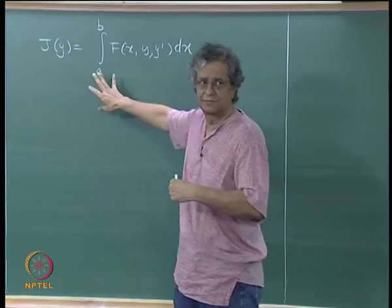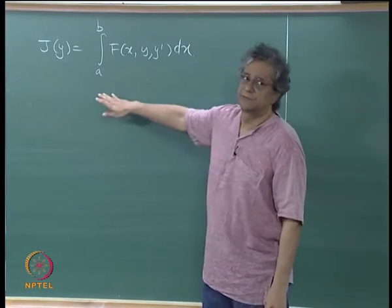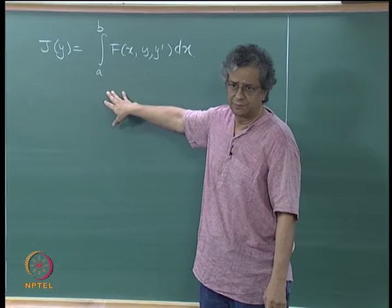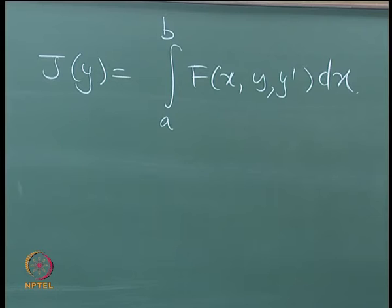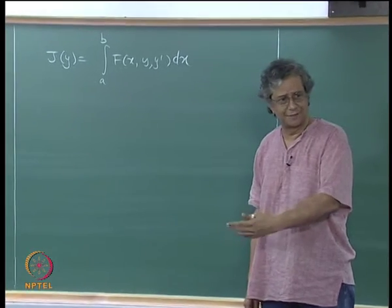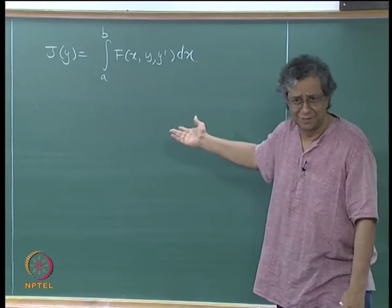If you want an extremum for this — either a maxima or a minima — we saw that you could take the first variation. To find out whether it is a maxima or minima, just as with a regular function you would take the second derivative and check the sign, in this case you would take something called the second variation.